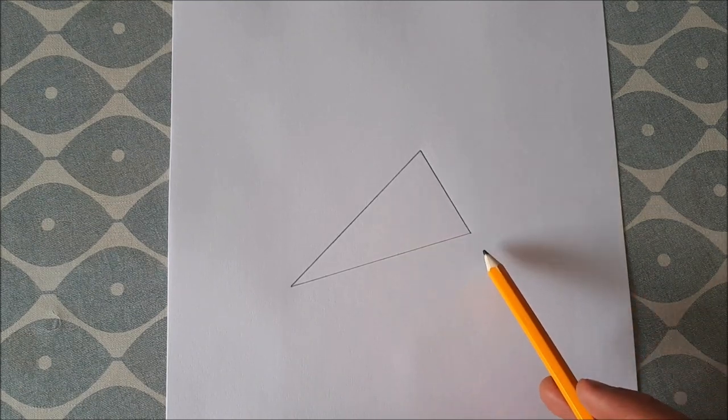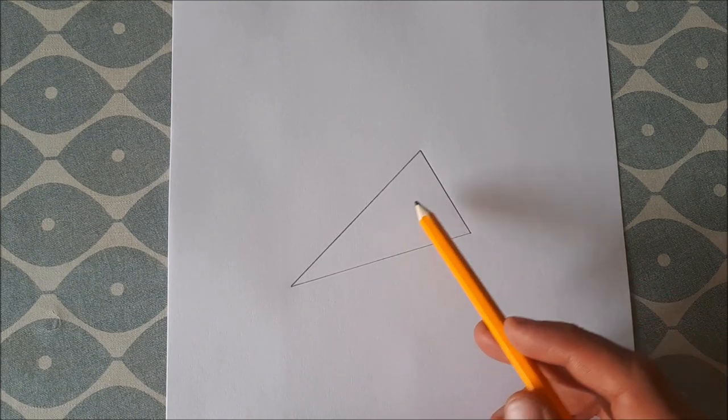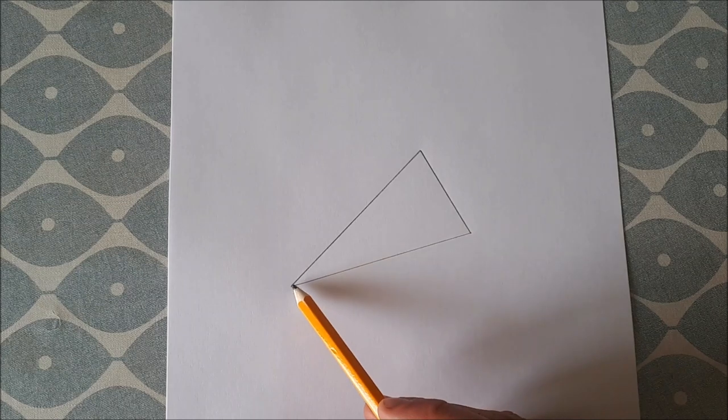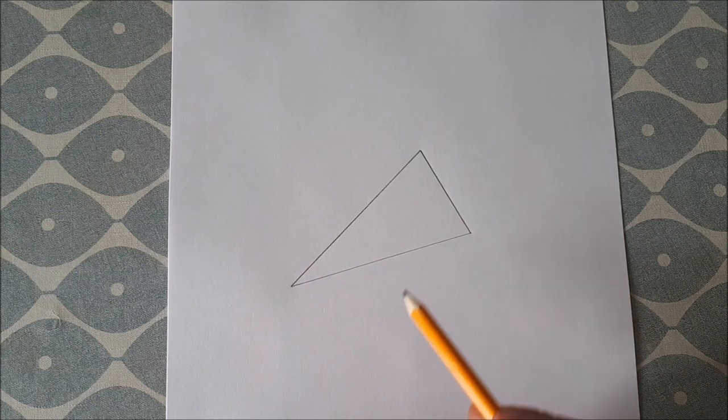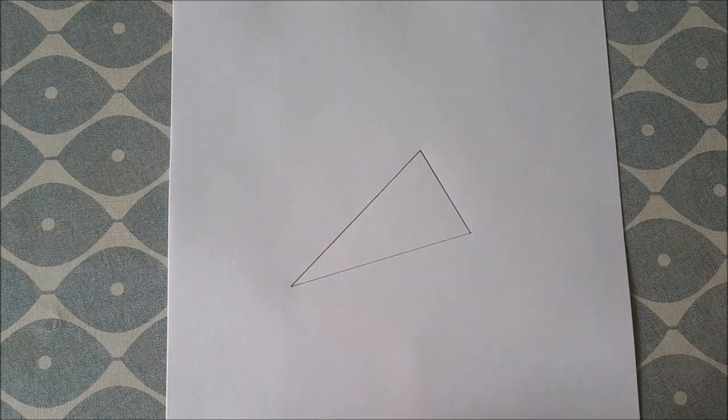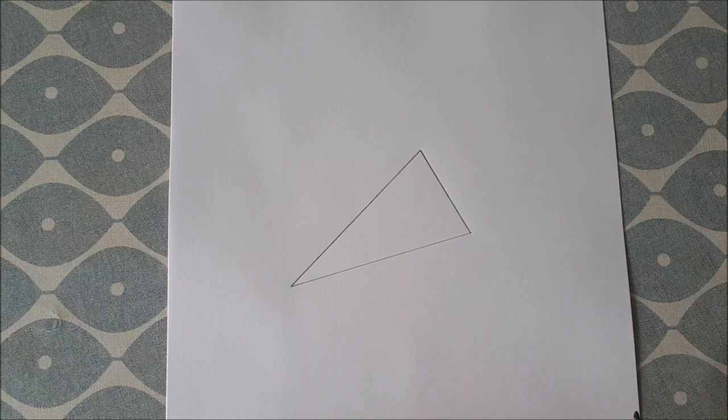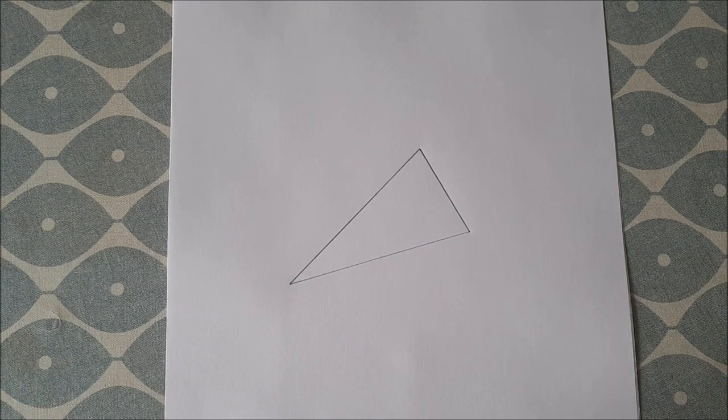You do the same for another side. Get the bisector, join the bisector to the opposite vertex, and draw the median of that angle. Where these two medians meet, that will be the centroid of the triangle.